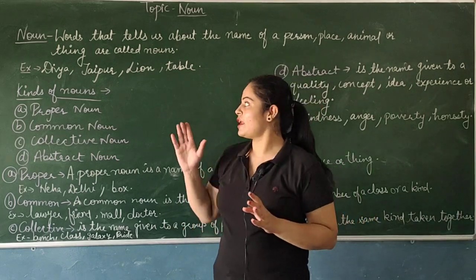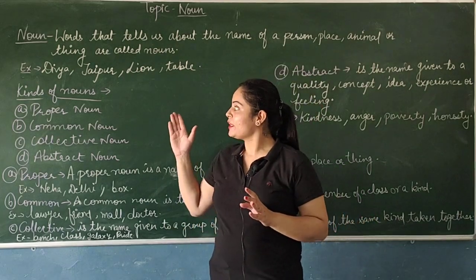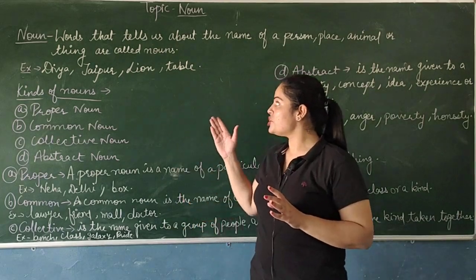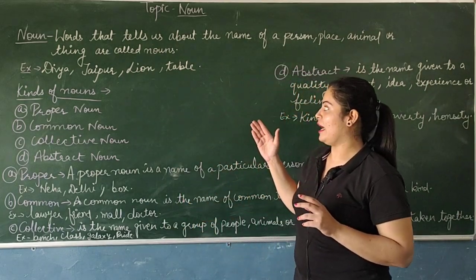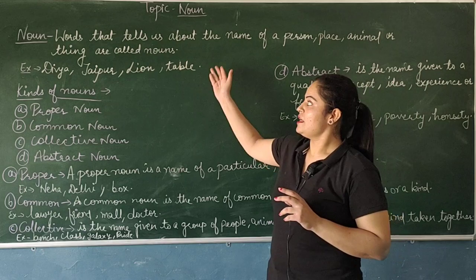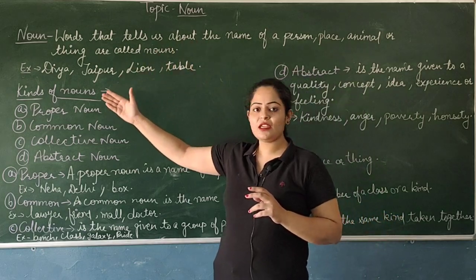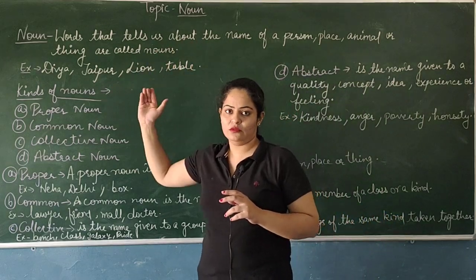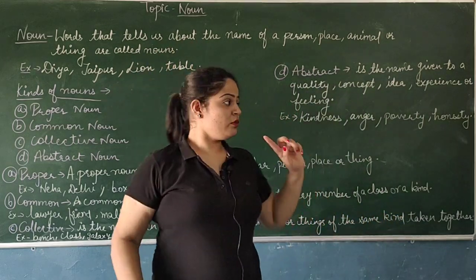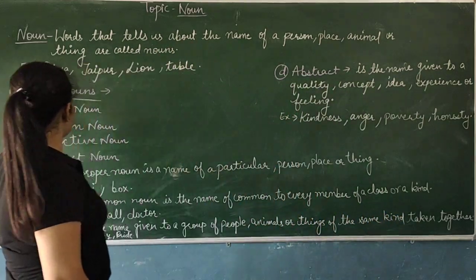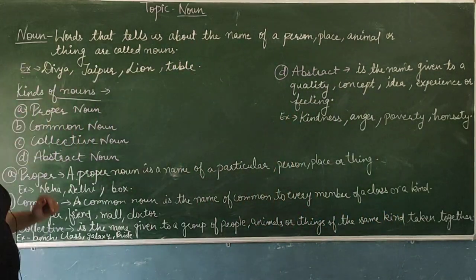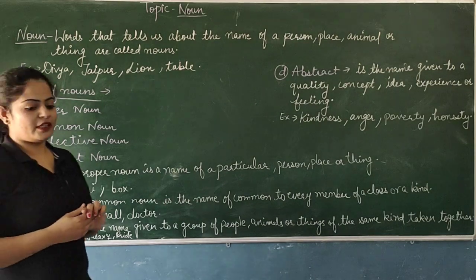For example: Divya, Jappu, Lion, Table — these all are nouns. Noun is called Sangya.